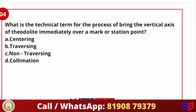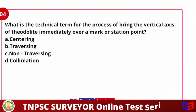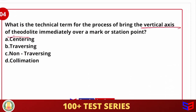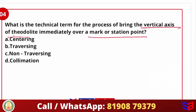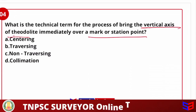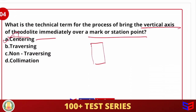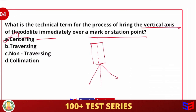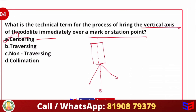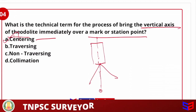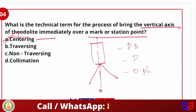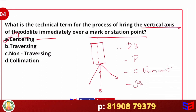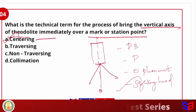What is the technical term for the process of bringing the vertical axis of a theodolite immediately over the mark or station point? The options are centering, traversing, non-traversing, and collimation. The answer is centering. In this process, the vertical axis is made to coincide with the station point. We can do centering by using a plumb bob, periscope, optical plummet, or sliding head.